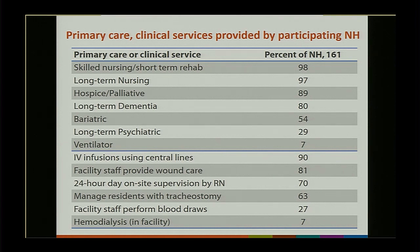The mean number of days per week the medical director was in the nursing home was 1.8. Mean IP experience was 7.4 years, and mean years at that given nursing home was 2.9 years. For primary care and clinical services: the vast majority of nursing homes provided skilled nursing or short-term rehab, fewer provided long-term psychiatric care at 29%, and 7% provided ventilator care. The vast majority provided IV infusions using central lines; relatively few provided hemodialysis within the facility. The distribution of service types tends to look like the national picture.